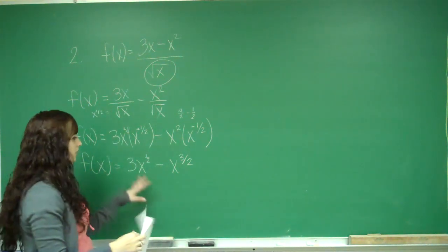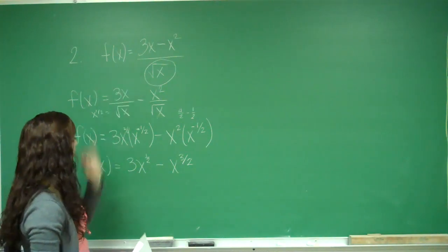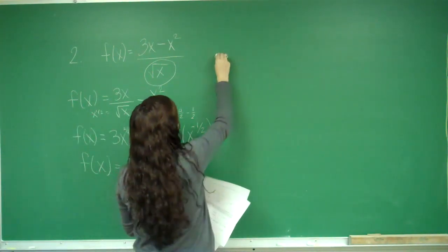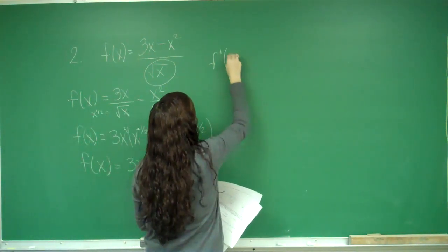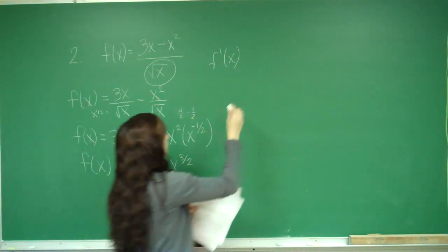Now that I have my function reduced like this, it's a lot easier to find the derivative than here. So now I'm just going to use power rule. f prime of x.